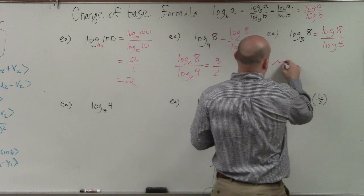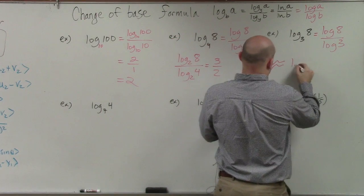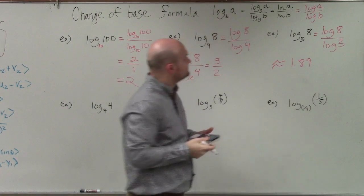So therefore, I'm approximating. So we can say it's going to be approximate 1 point. I'm going to round to the 100th, 8, 9. All right?